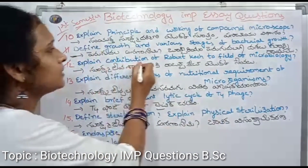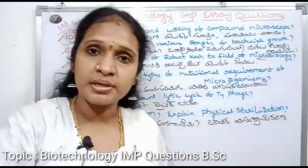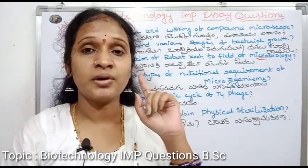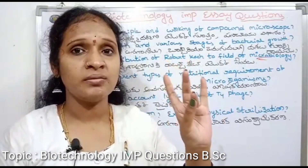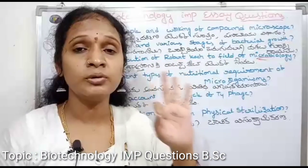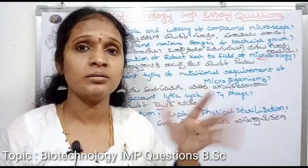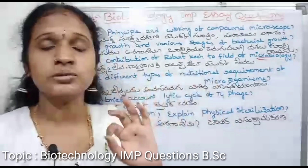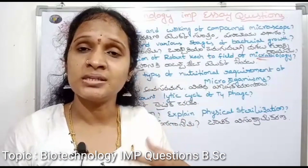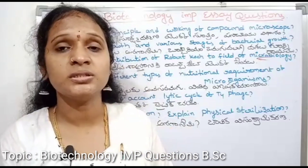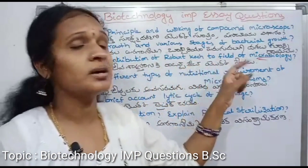Explain the contribution of Robert Koch to the field of microbiology. Robert Koch is a scientist. Confirming scientists include Louis Pasteur, Antony Van Leeuwenhoek, and Robert Koch. He is very important for microbiology and science. Robert Koch's work and services to microbiology are significant.